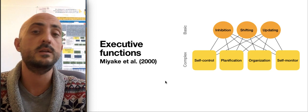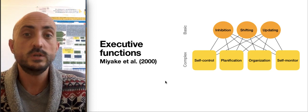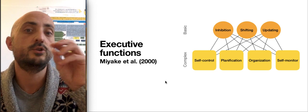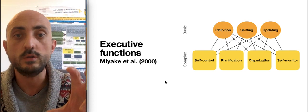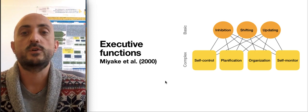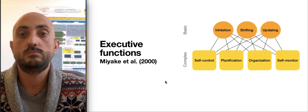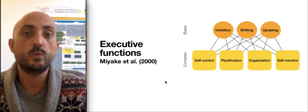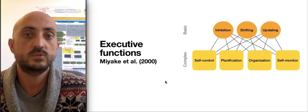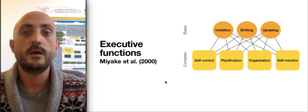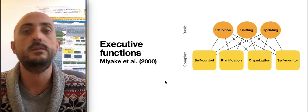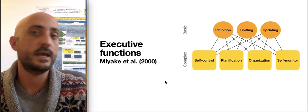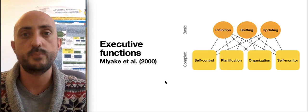These are inhibition, shifting, and updating. Inhibition is the cognitive skill that allows us to refrain from an automatic response in order to focus on a more controlled response. For example, when we must refrain from eating a cookie when we are starving and need something to eat, and we must refrain our automatic response to eat a biscuit in order to focus on better food like an orange or fruit. It's very important for our lives.